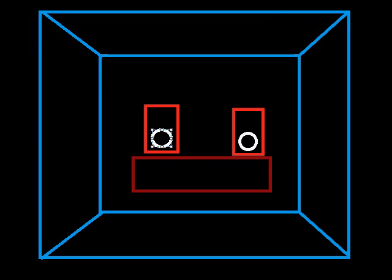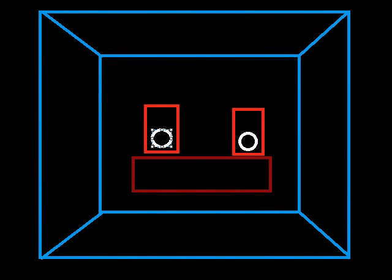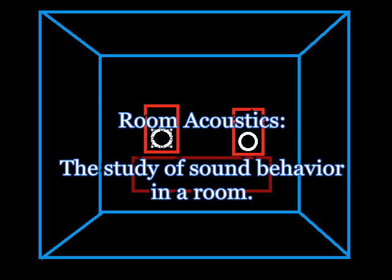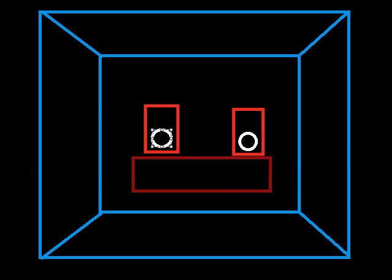This is basically the number one problem that happens with people who don't really understand room acoustics. Now again, the basic definition of room acoustics is the study of sound behavior in a room. It's that simple, but like I said, it can be complicated to explain, but the easiest way to understand it is, think about it for a second.